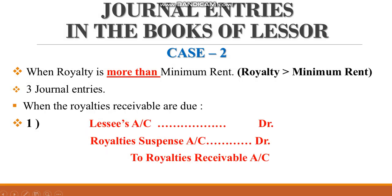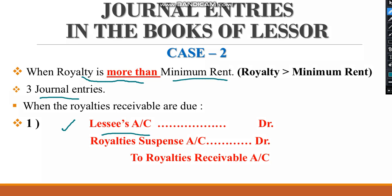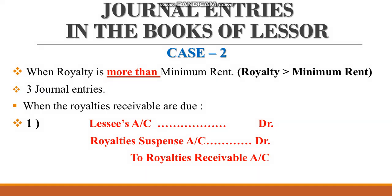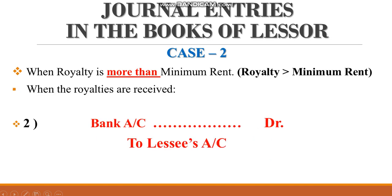Case number two: when royalty is more than minimum rent. There are three entries to pass in the books of the lessor. Entry number one is: lessee's account debit, royalty suspense account debit, to royalty receivable account. Entry number two is: bank account debit to lessee's account.